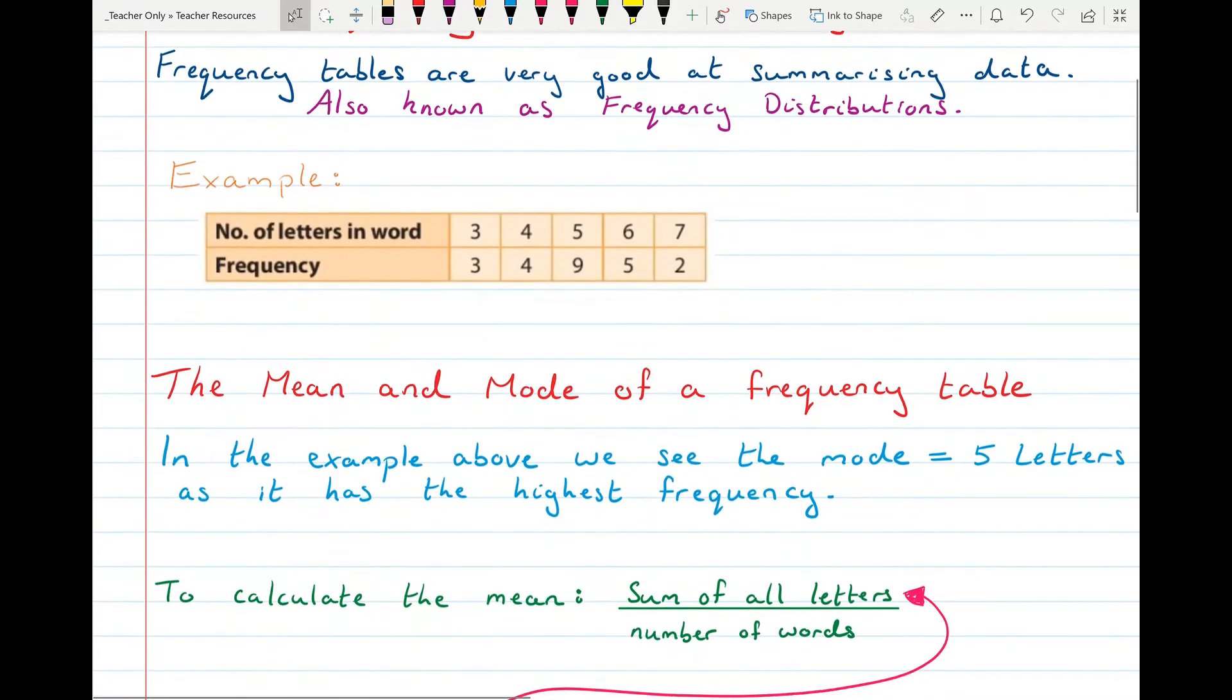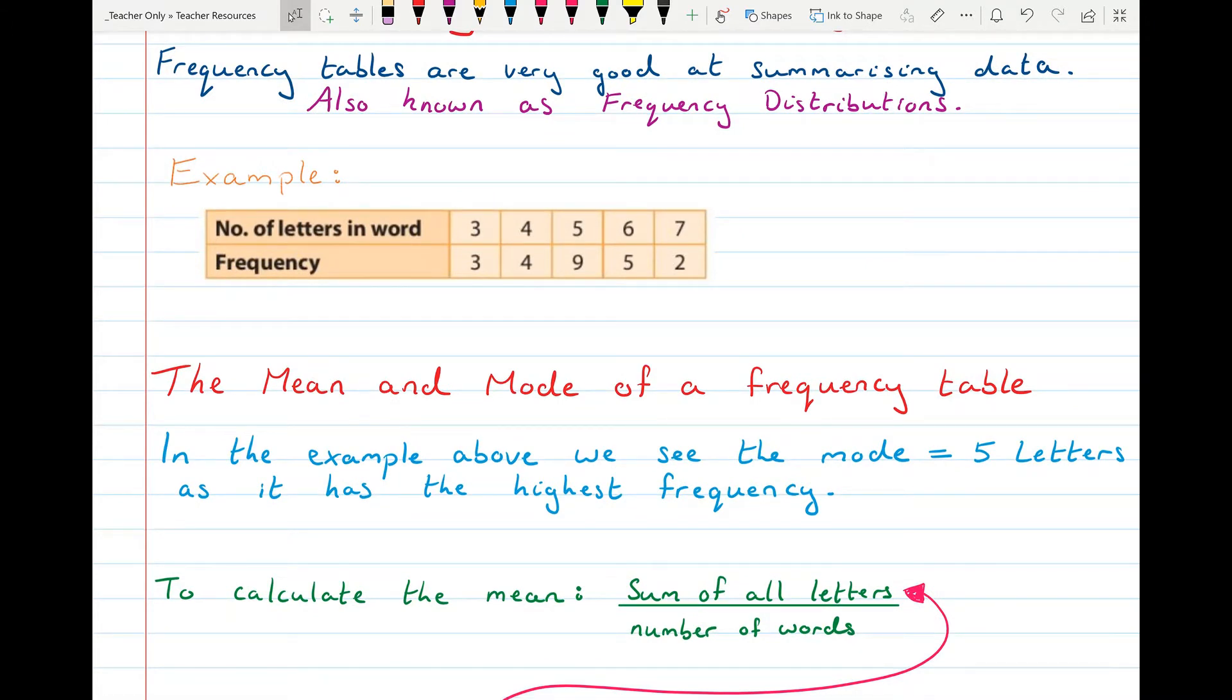To find the mean and the mode of the frequency table. Well we know that the mode is the most frequently occurring piece of data. So here in the frequency table the most frequently occurring piece of data was five letters in a word because there were nine words that had five letters in them. They had the highest frequency so five is the mode.